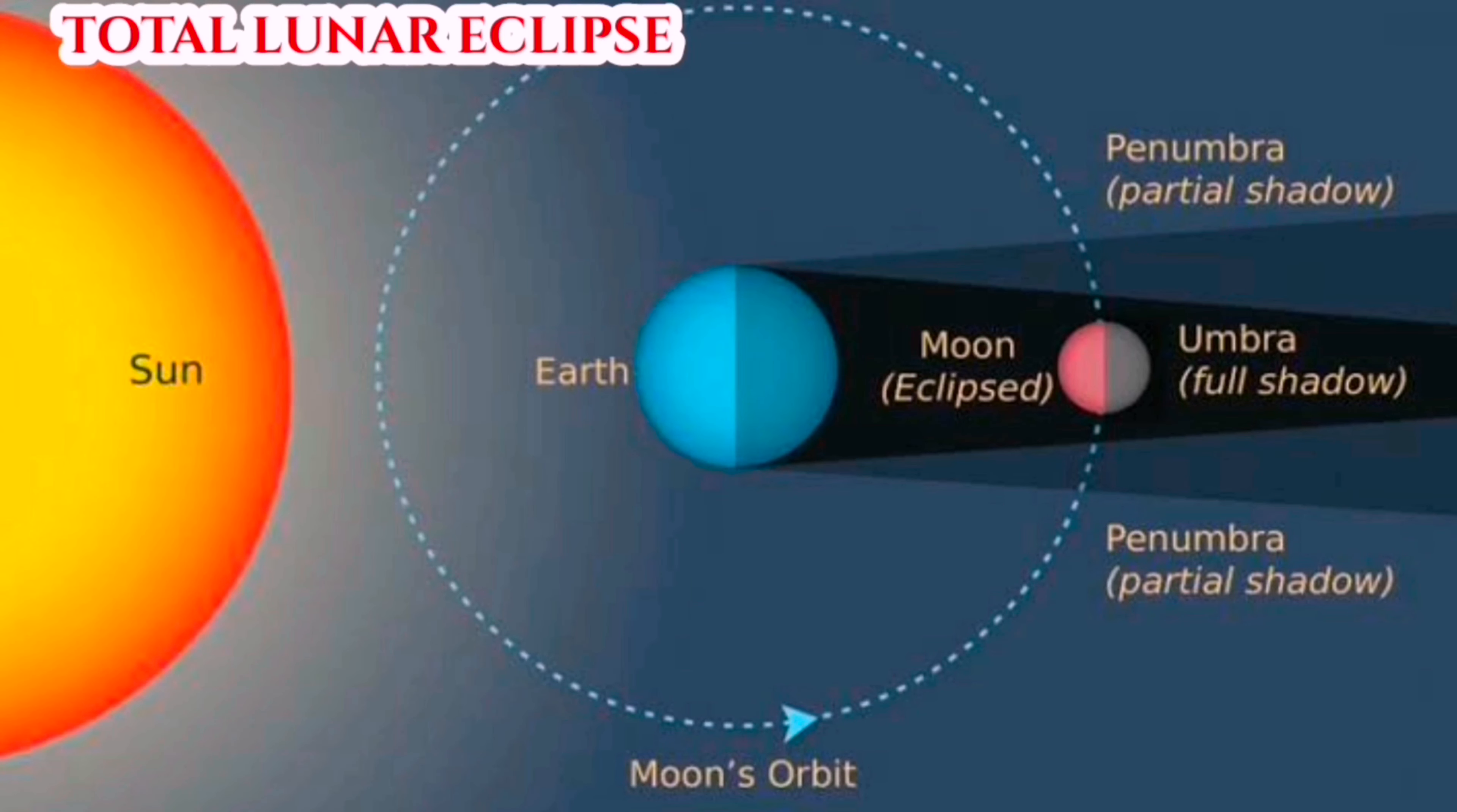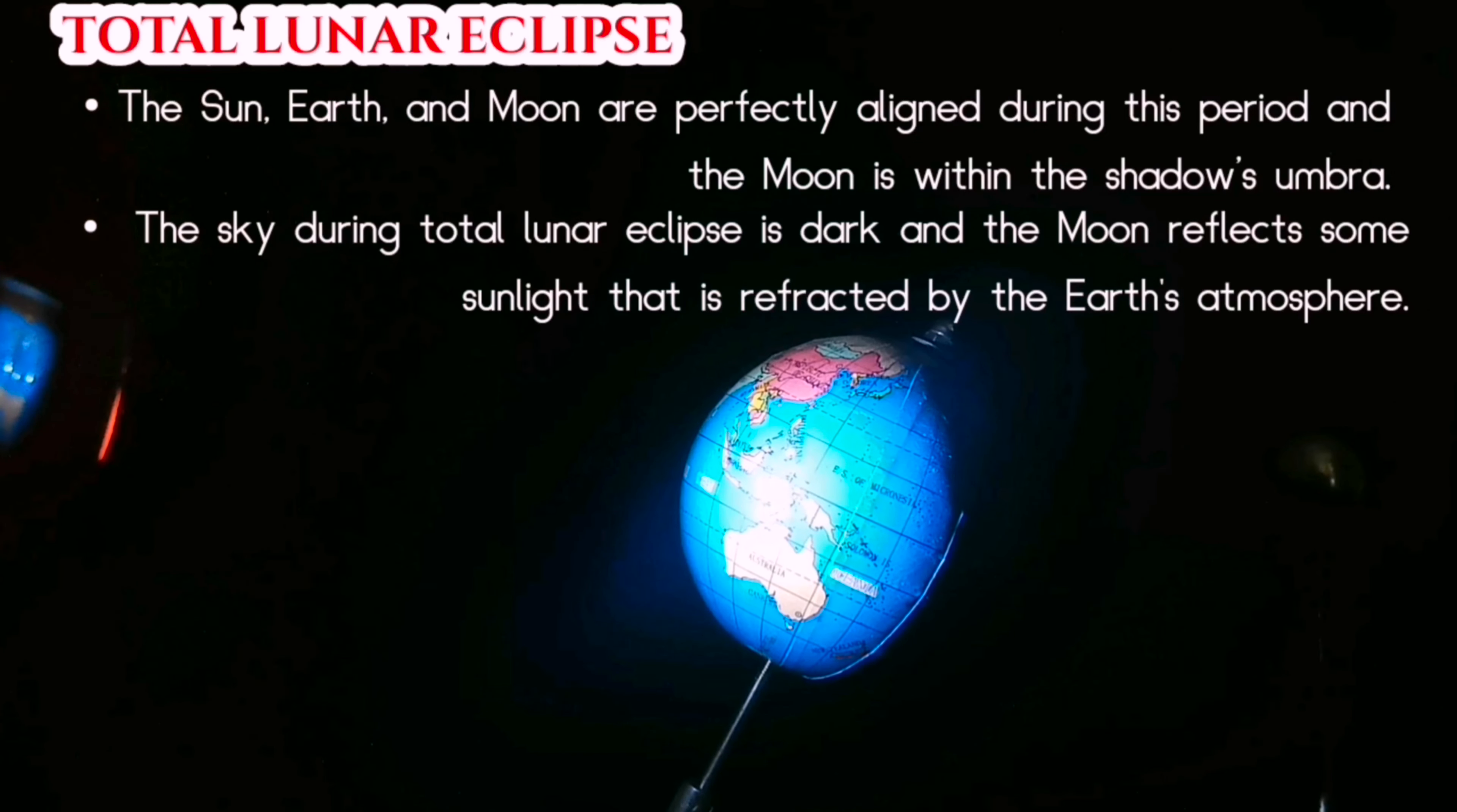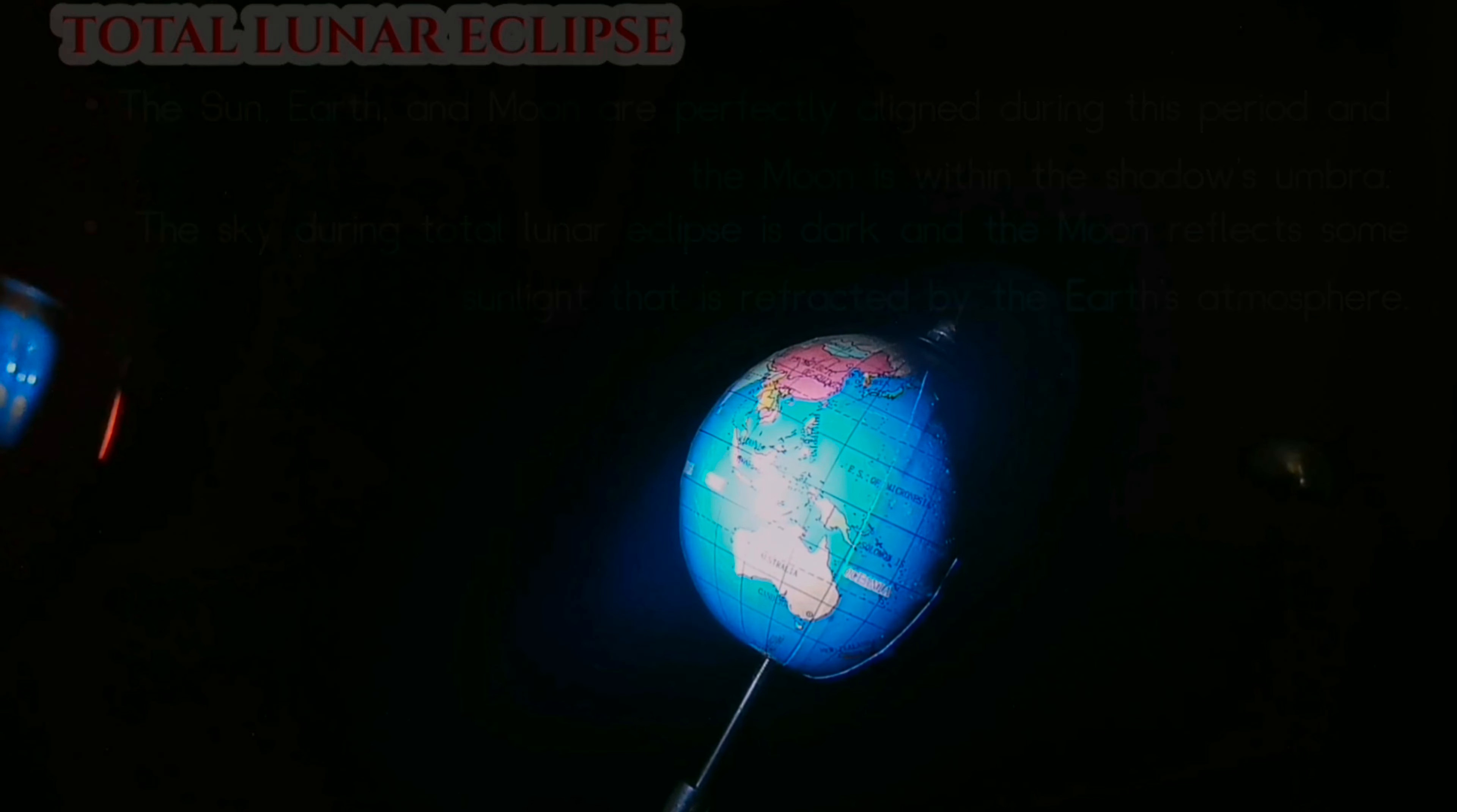For total lunar eclipse, the sun, Earth, and moon are in perfect alignment, and the moon is within the shadow's umbra. The sky during the total lunar eclipse is dark, and the moon reflects some sunlight that is refracted by the Earth's atmosphere. The light that is refracted is reddish in color and can cause the moon to appear blood red in color. The total lunar eclipse occurs every two and a half years.